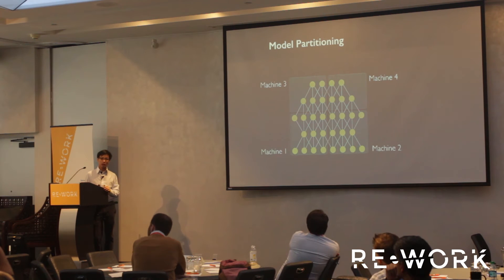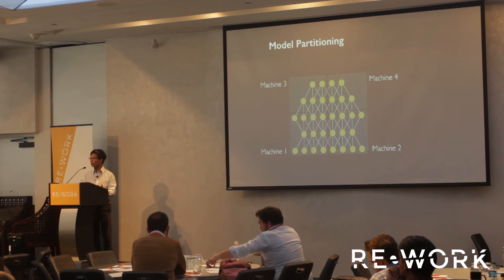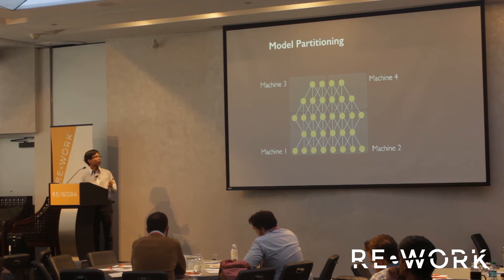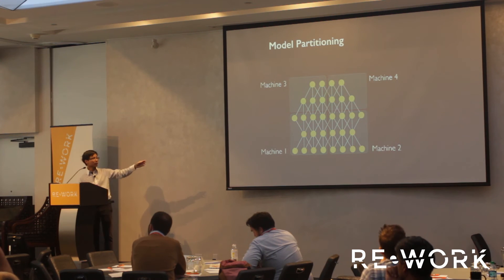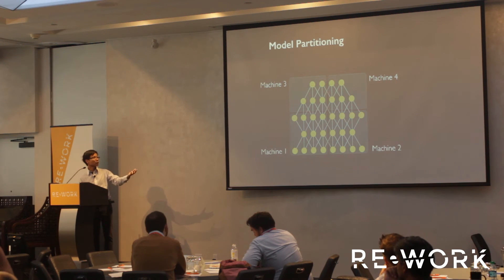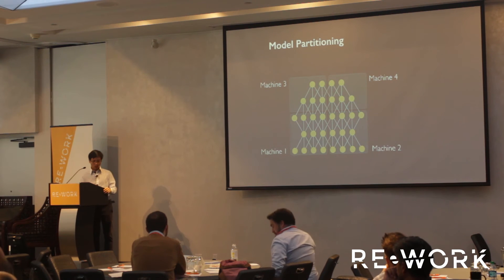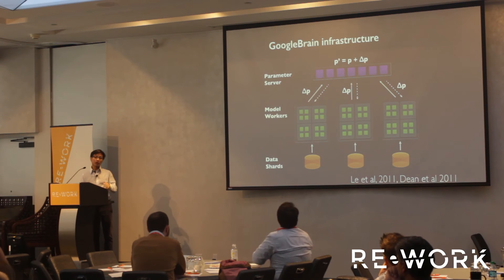At Google, we also worked on scalability. Since we have to deal with a lot of data — billions of images, billions of YouTube videos — we want to scale the training. The way we scale is using model parallelism. We take a network and break it into several machines. Machine number one computes features on the left side of the image, machine number two computes features on the right side, and so on. But that alone is not enough.